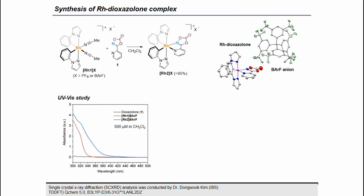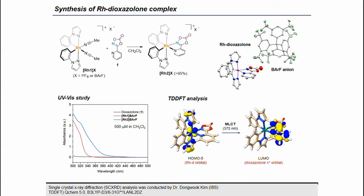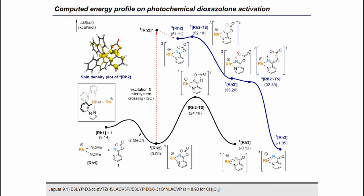UV-vis measurements were performed to analyze the photochemical character of the rhodium dioxazolone complex. Interestingly, while the free dioxazolone ligand shows almost no absorption in the visible light region, when it forms a complex with rhodium, it shows an absorption feature around 360 nm to 400 nm. This absorption feature was further characterized by TDDFT simulation, where the lowest absorption band was found at 375 nm, which was assigned as metal-to-ligand charge transfer character from the rhodium d orbital to the π* orbital of the dioxazolone ligand.